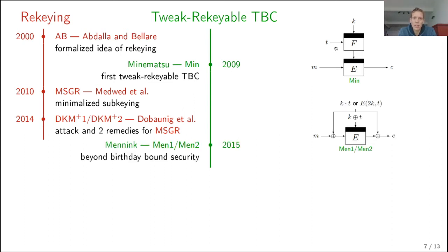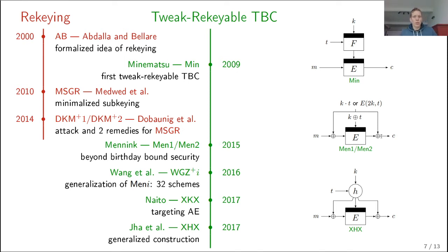In 2015, two beyond-birthday-bound secure tweak-rekeyable tweakable block ciphers were introduced. The idea is that the key and the tweak are added to get the subkey — fine in the black box setting — and also mingled to get masking for the input and output of the block cipher. Wang et al. patched a small gap in the Minamatsu construction and generalized it to 32 schemes. Naito presented a tweak-rekeyable scheme targeting authenticated encryption. Eventually, Jador introduced XHX: a generalized construction with a block cipher and a universal hash function H taking the key and tweak to generate three subkeys — one into the block cipher and two into the mask.